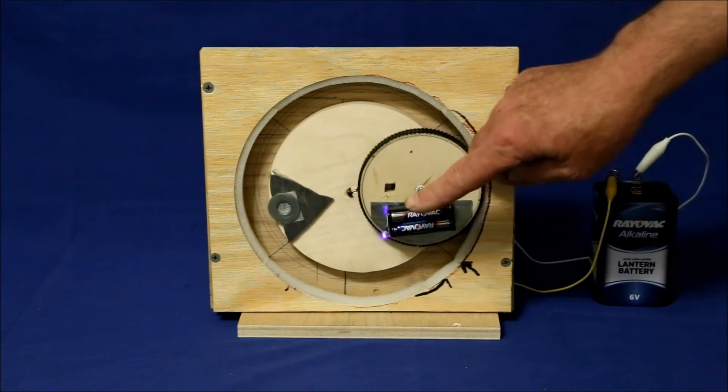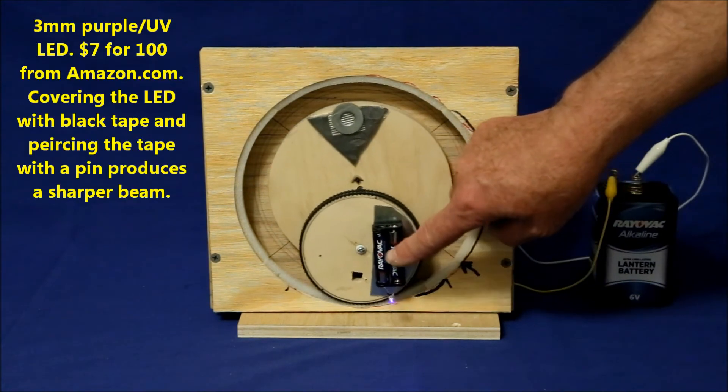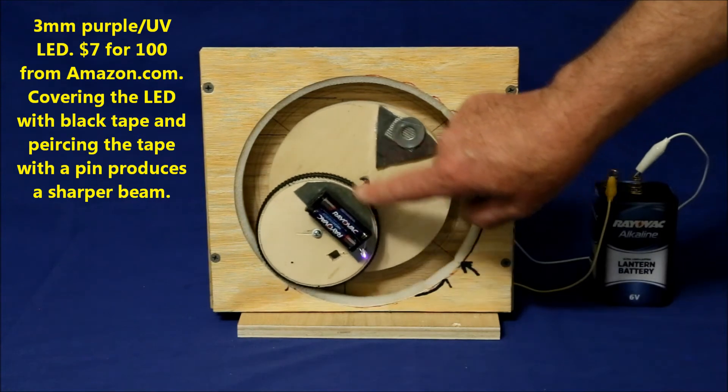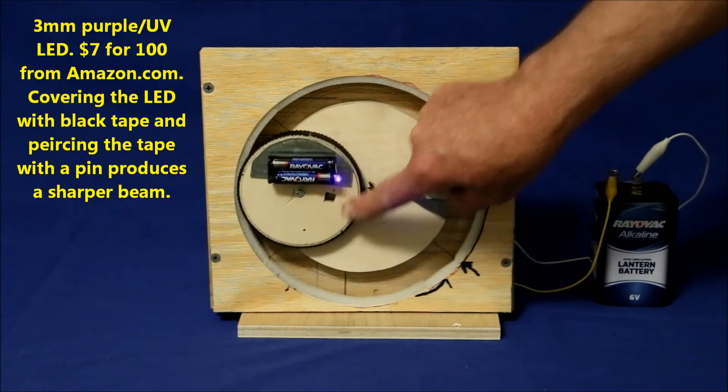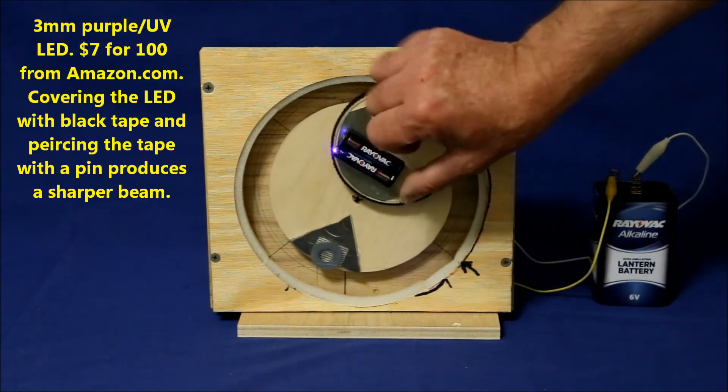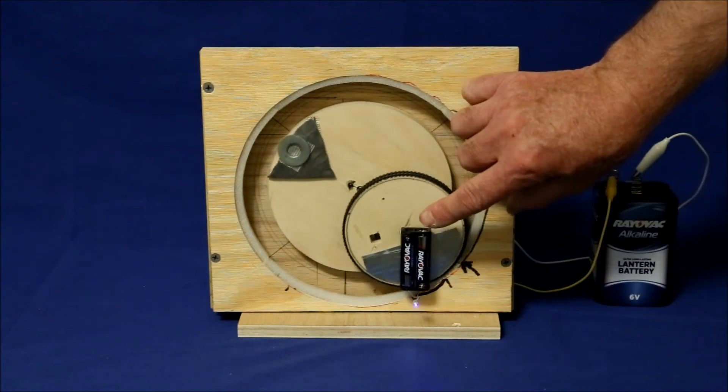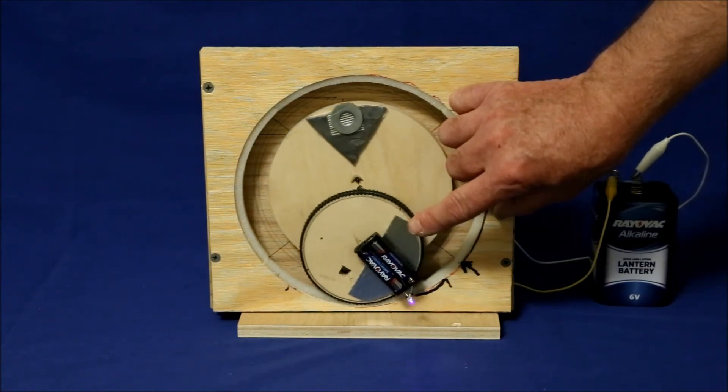The light is a 3 millimeter ultraviolet LED powered by two AAA batteries. A piece of sheet metal on the small disc and a magnet on the back of the battery pack allows the position of the light to be adjusted which controls the patterns that are created on the phosphorescent screen.